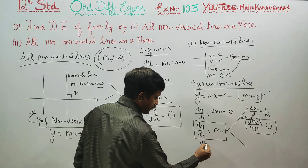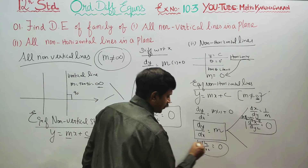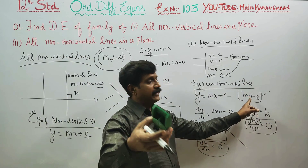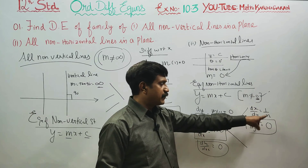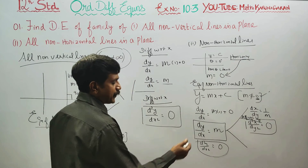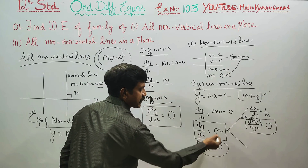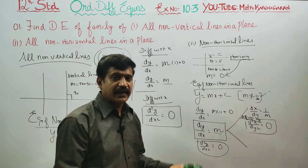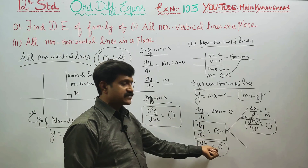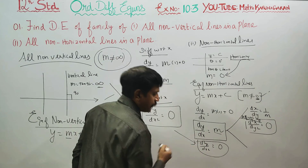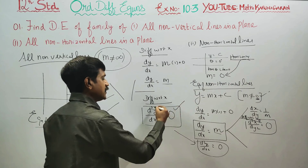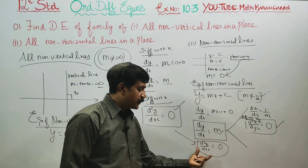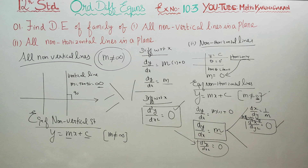So d squared y by dx squared is equal to 0. This is the exact method. In general, m is a constant; whether m is infinity or not, the result holds. Any method you use gives the same answer. Thank you.